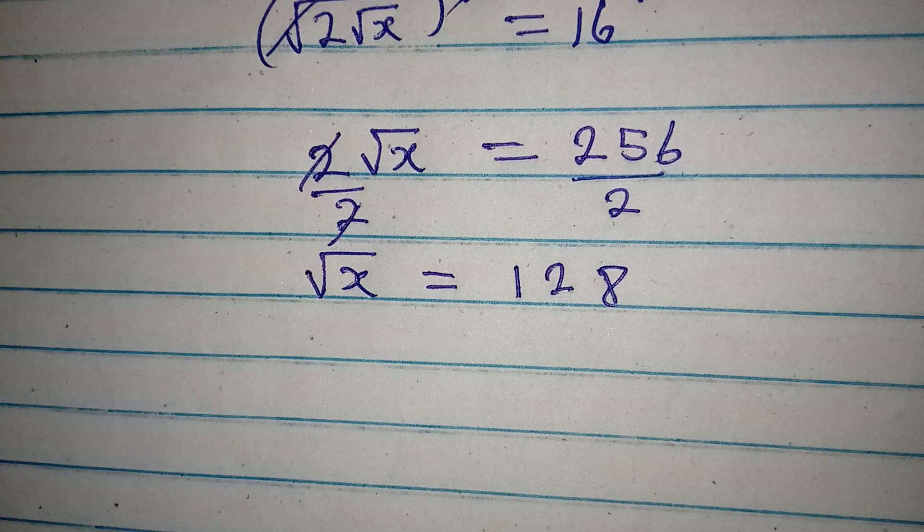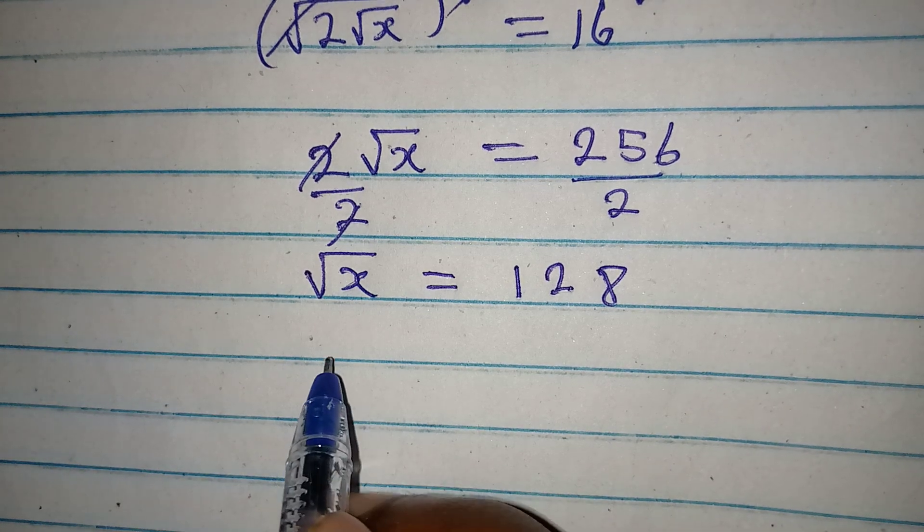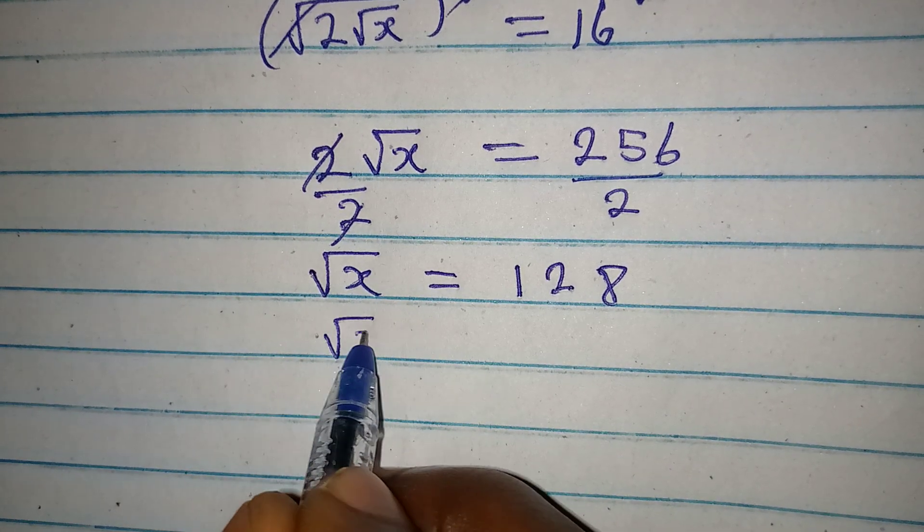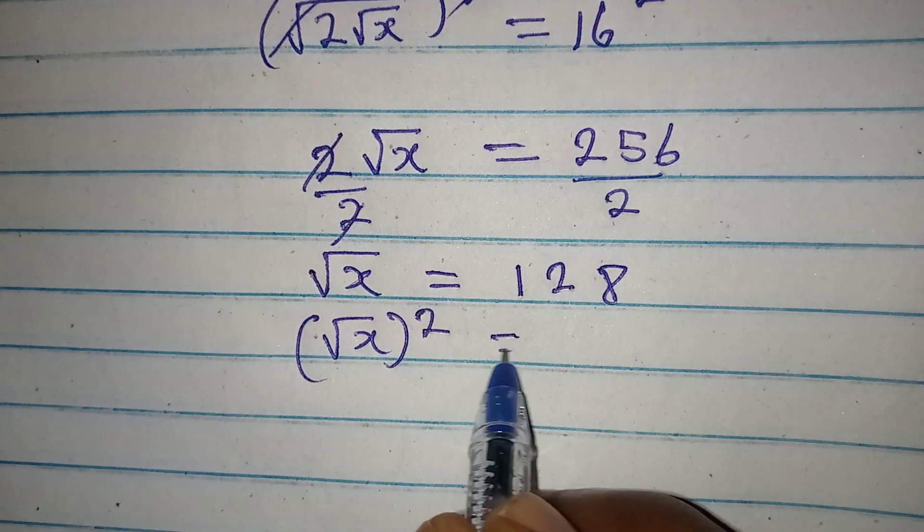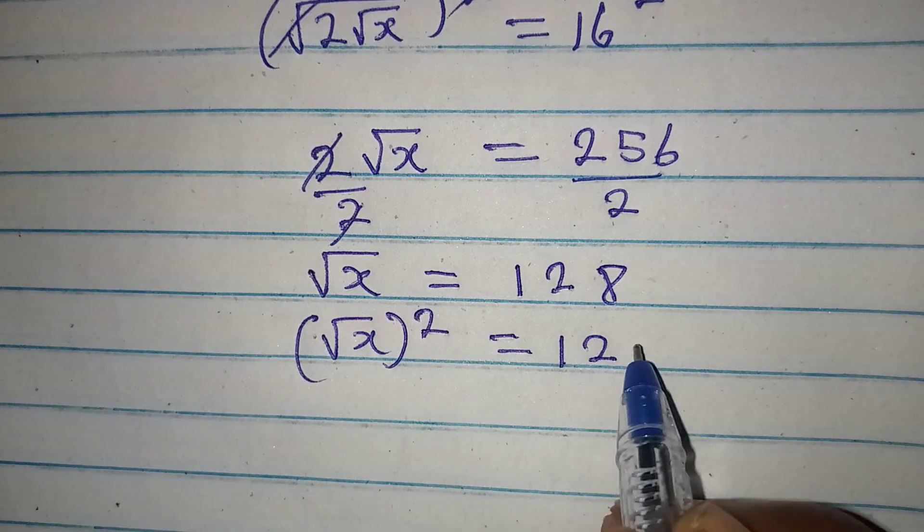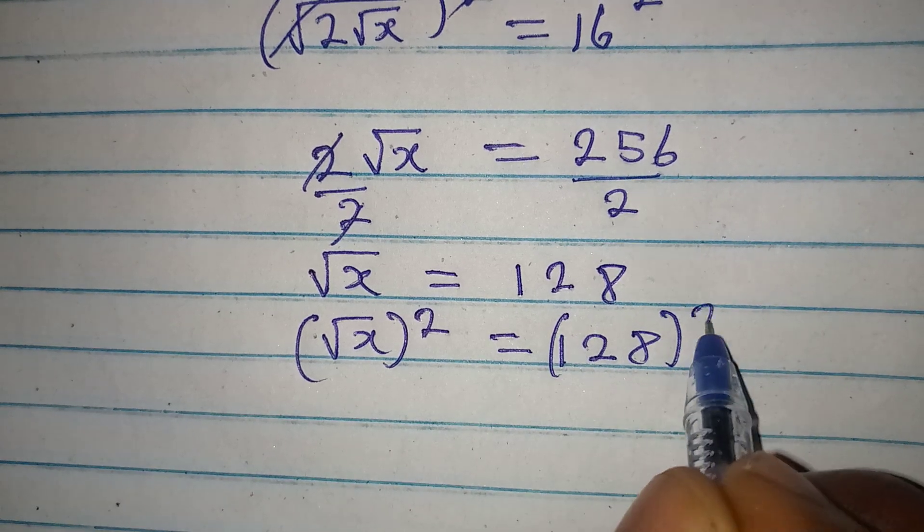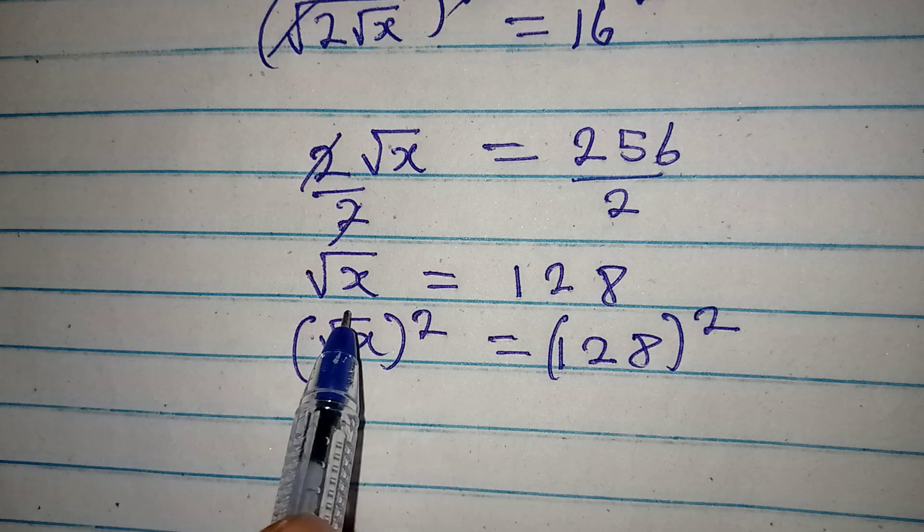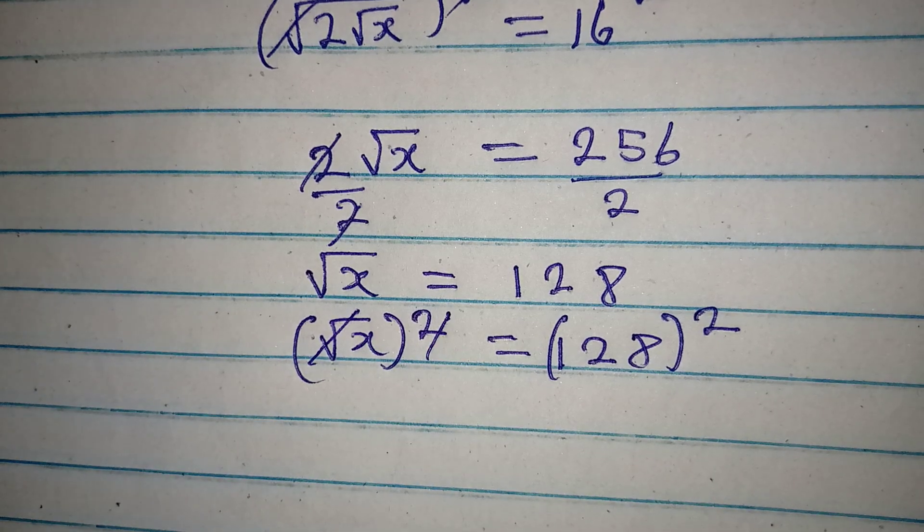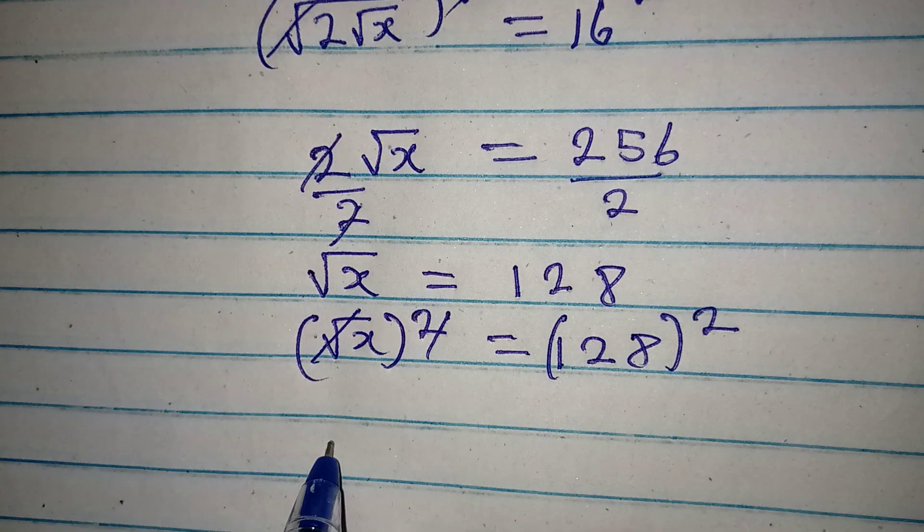So we will have square root of X squared equal to 128, and then the whole of this will be squared as well. Now this will cancel this and then we have X...